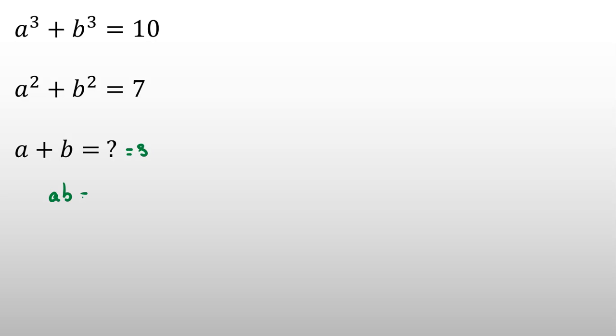I call ab equal to product p, and I want to write these two equations in terms of s and p. For the first equation, a³ + b³, we have the identity a³ + b³ = (a + b)(a² - ab + b²) equals 10.